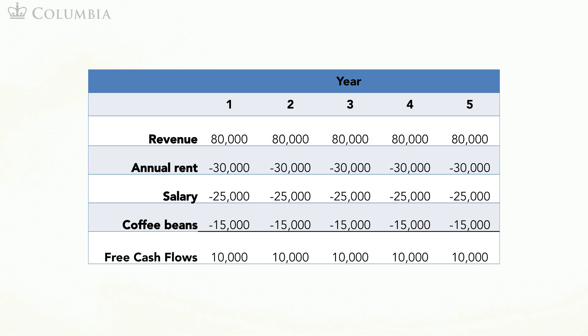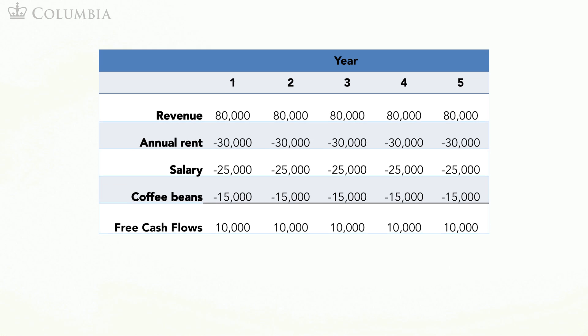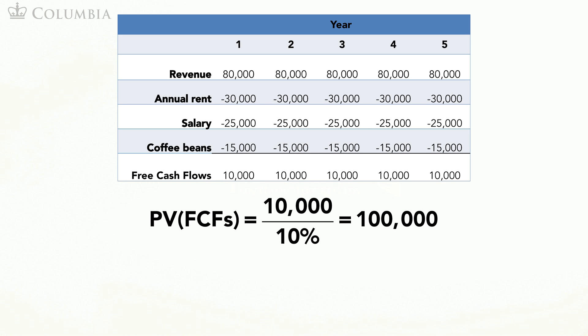In our next module, we will define this concept formally. These cash flows are shown here. They are the same as in our first version of this example, or 10,000 per year. The present value of these cash flows is 100,000. This 100,000 is the value of the assets of the firm.